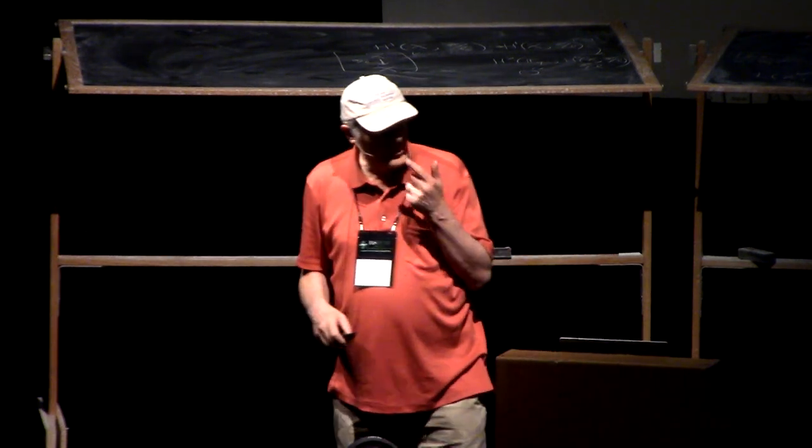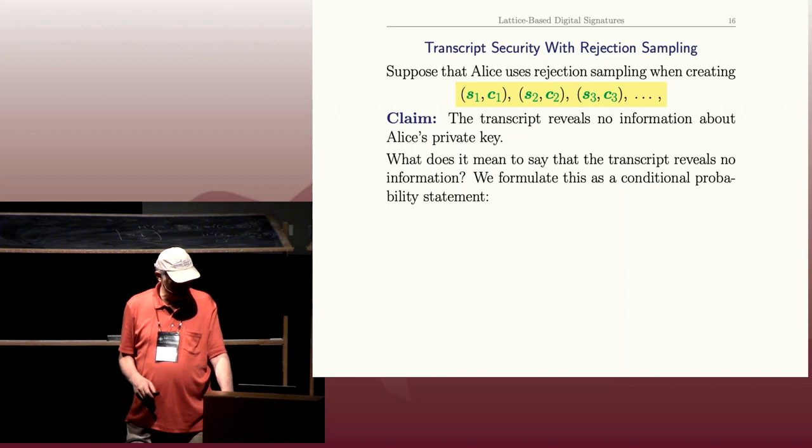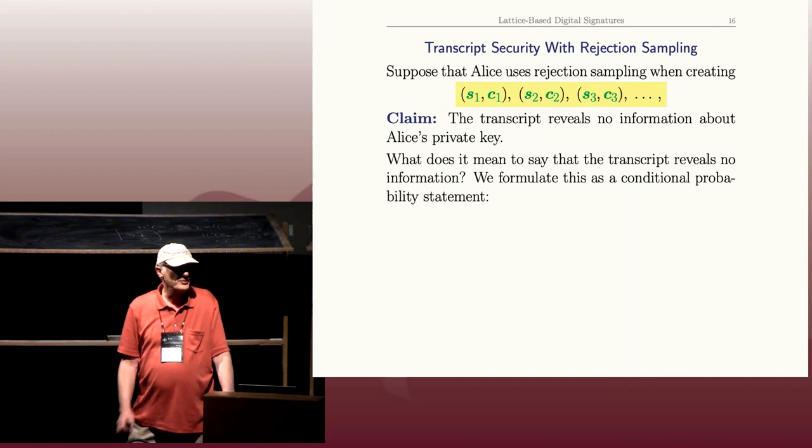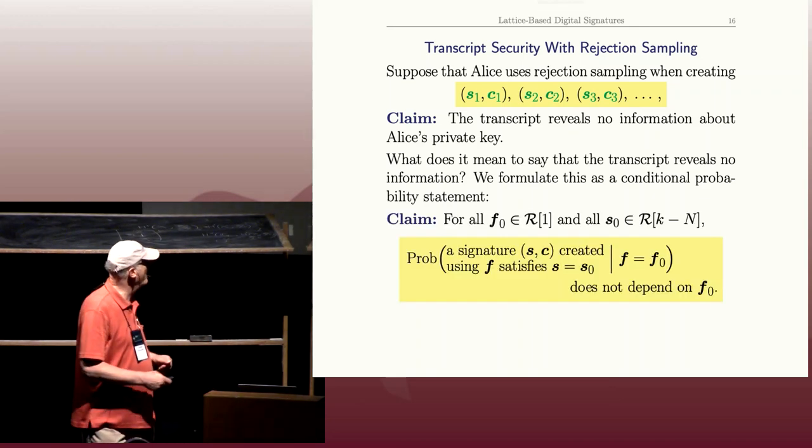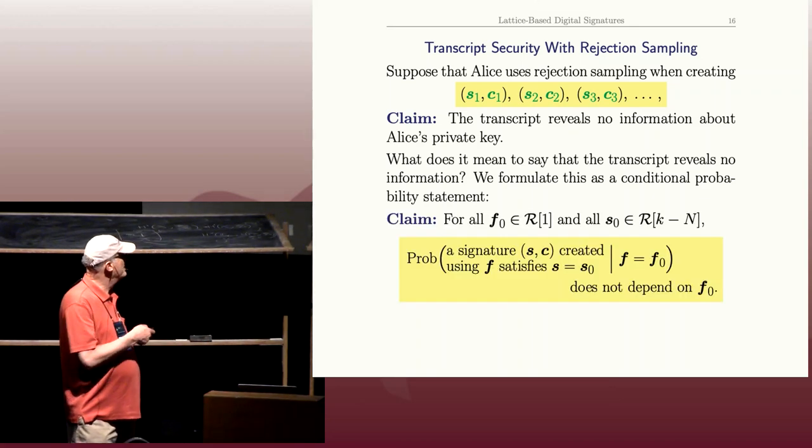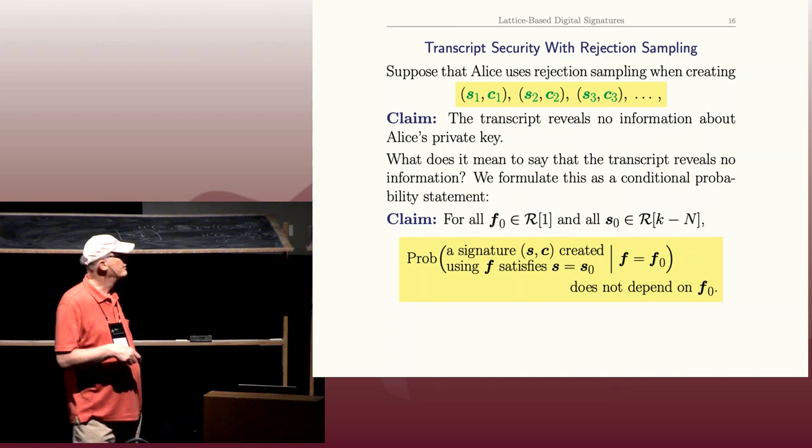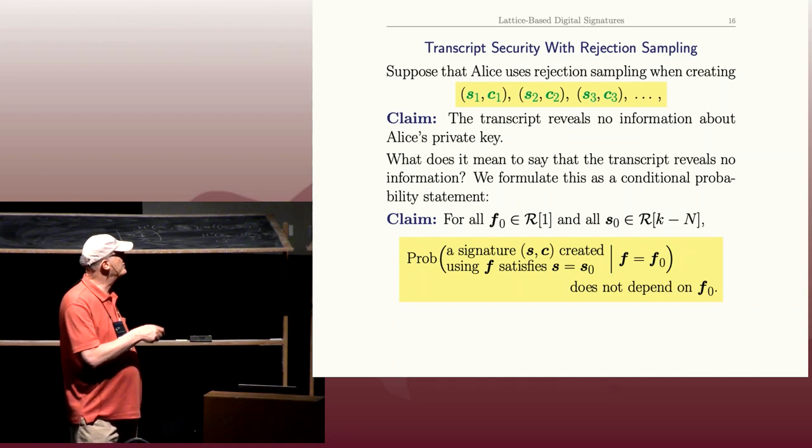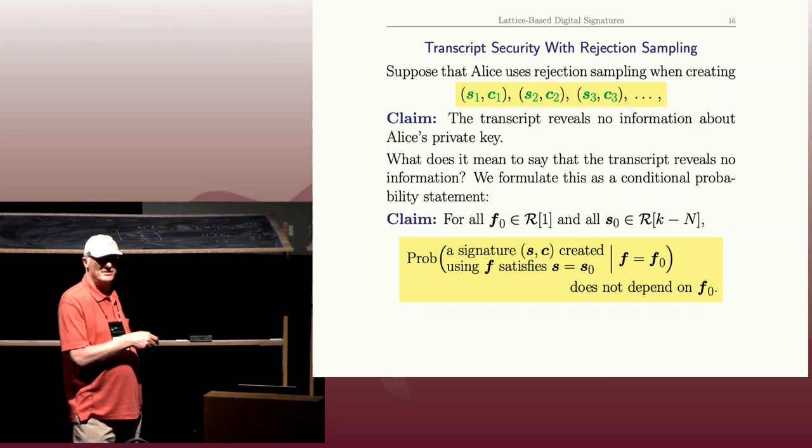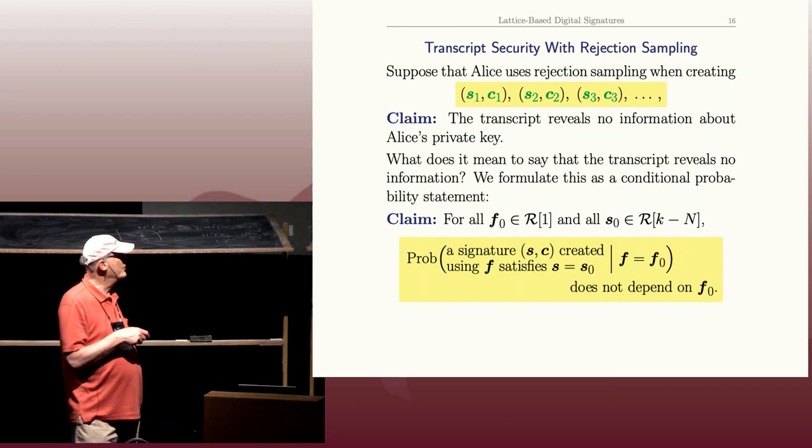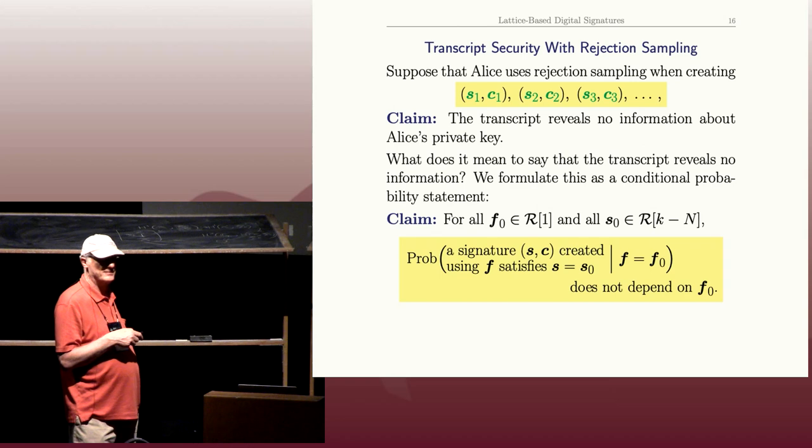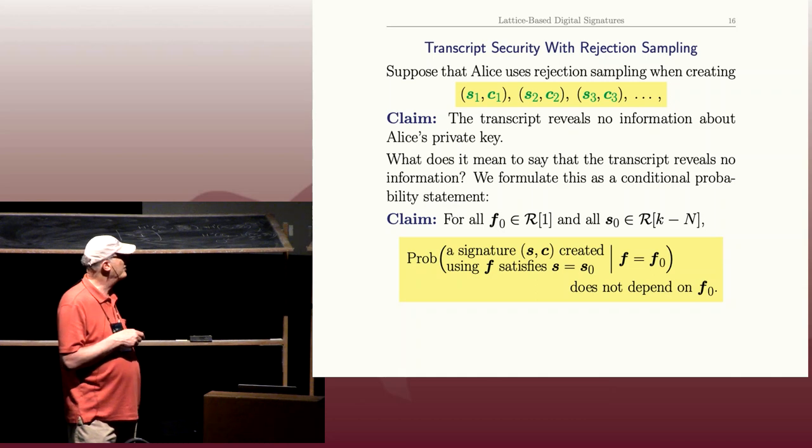So how do we quantify this? What does it mean to say it reveals no information? Well, I'm going to phrase this as a conditional probability. I hope people have seen a little bit of probability theory. So my claim is that if Alice chooses the private key F_0, okay, regardless of what F_0 is and regardless of which—remember the signatures are in this box, that's the rejection sampling step—that all the coefficients of the signatures have absolute value at most k minus n. Okay, so signatures have to be in this box.